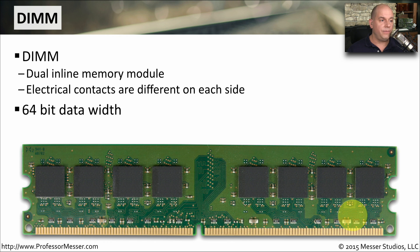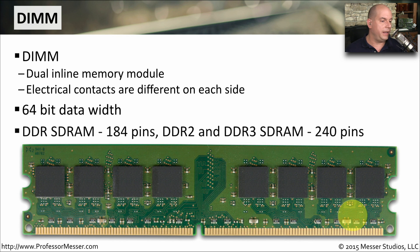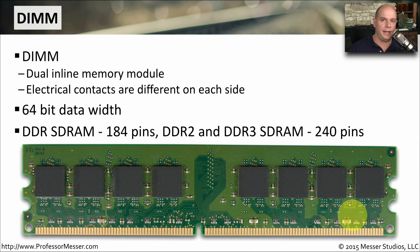DIMMs have a 64-bit data width — that is the size of the communication path between the memory and the CPU. There are different kinds of DIMMs: DDR SDRAM has 184 pins, while DDR2 and DDR3 memory have 240 pins. So it depends on the DDR memory you're using as to the number of pins it will use to connect to the motherboard.